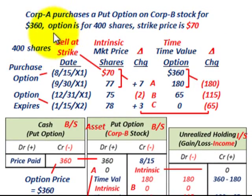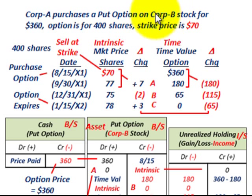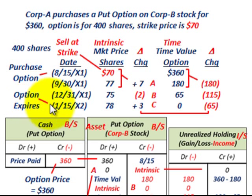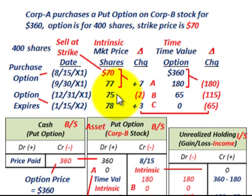Now let's look at our example. Corp A purchases a put option on Corp B's stock for $360 — that's what the option costs. The option is for 400 shares of Corp B's stock, and the strike price is set at $70 per share. When dealing with these options, we look at the purchase date and the expiration date, breaking values down into the intrinsic value portion — the change in market price per share — and the time value portion, tracking the change period to period.